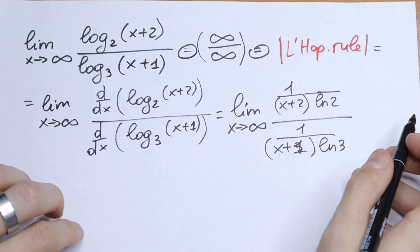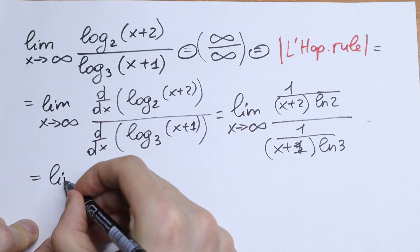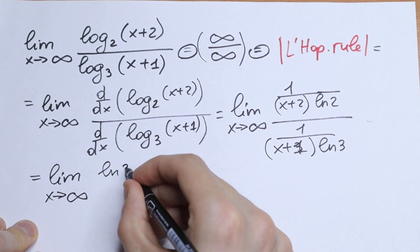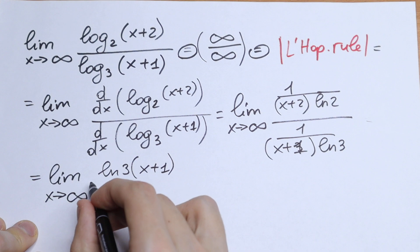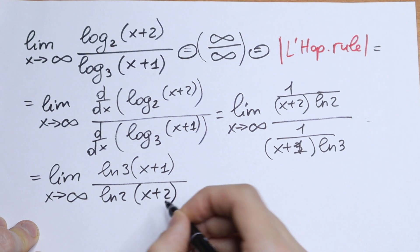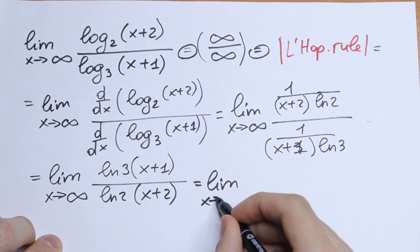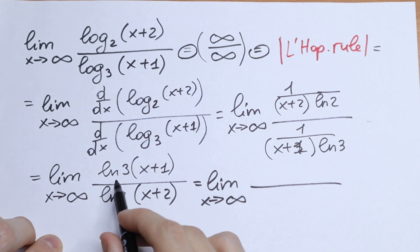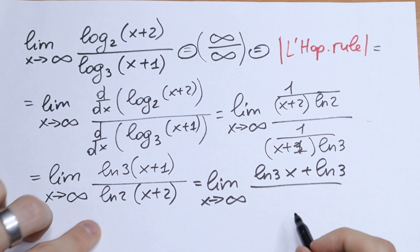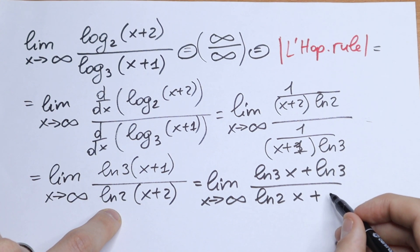So we need to divide these. When we flip and simplify, we will have the limit as x approaches infinity where the numerator becomes natural log 3 times (x+2). We can expand this parenthesis, giving us natural log 3 times x plus natural log 3 in the numerator, and natural log 2 times x plus 2·natural log 2 in the denominator.